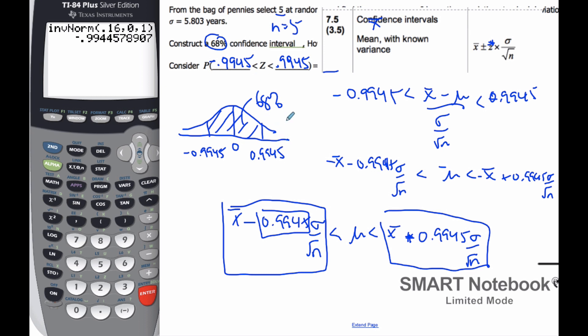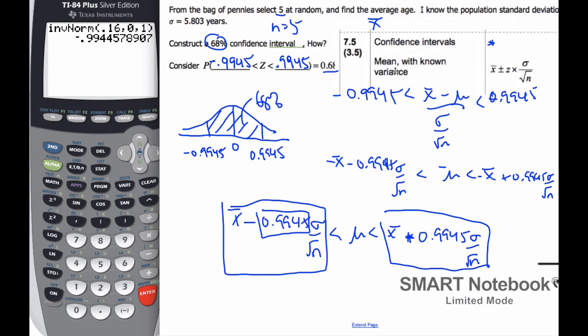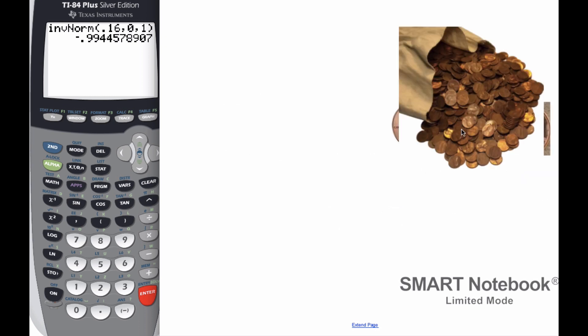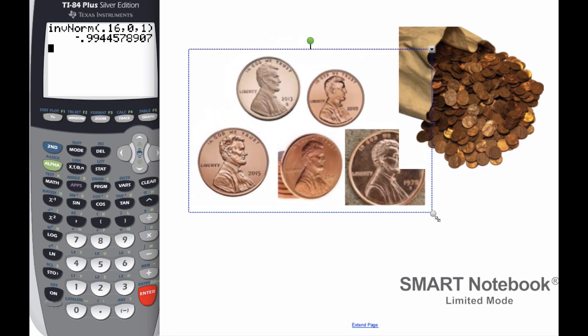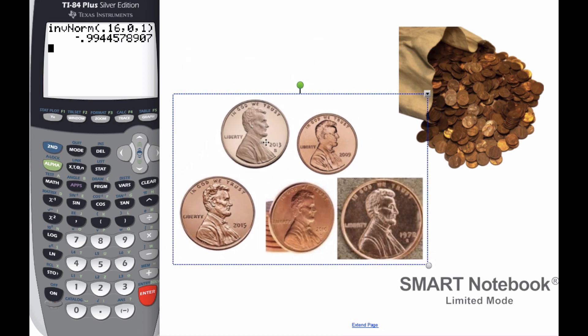So, let's actually do this example now. Let's calculate a confidence interval. To do so, let us actually go to a bag of pennies and select 5 at random to find the average age. So, here we go. We have a bag of pennies here, and I will magically pull out 5 pennies. And from these 5 pennies, I have these ages here: 2013, 2009, 2015, 2010, and 1972.